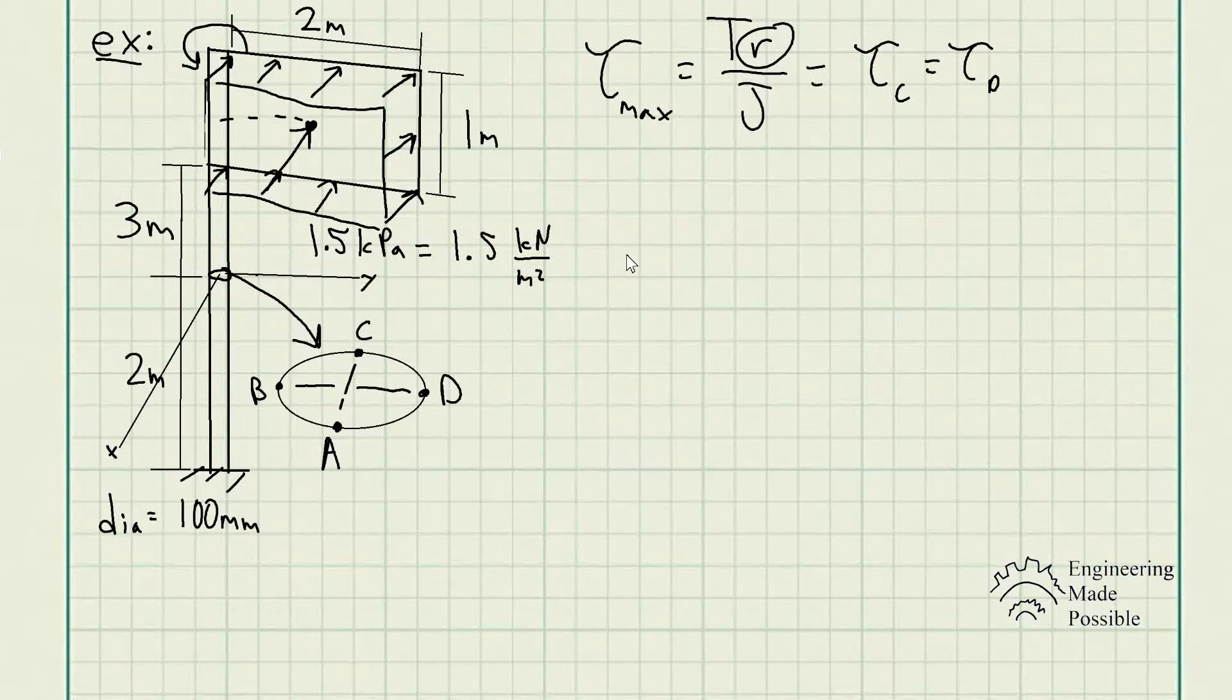First off, we know when there's a wind loading here, the sign is going to be pushed and therefore it's going to want to rotate the post. That's going to cause a shear stress due to torsion, and we already know the equation for the max shear stress due to torsion, which is the torque times the radius divided by the polar moment of inertia.